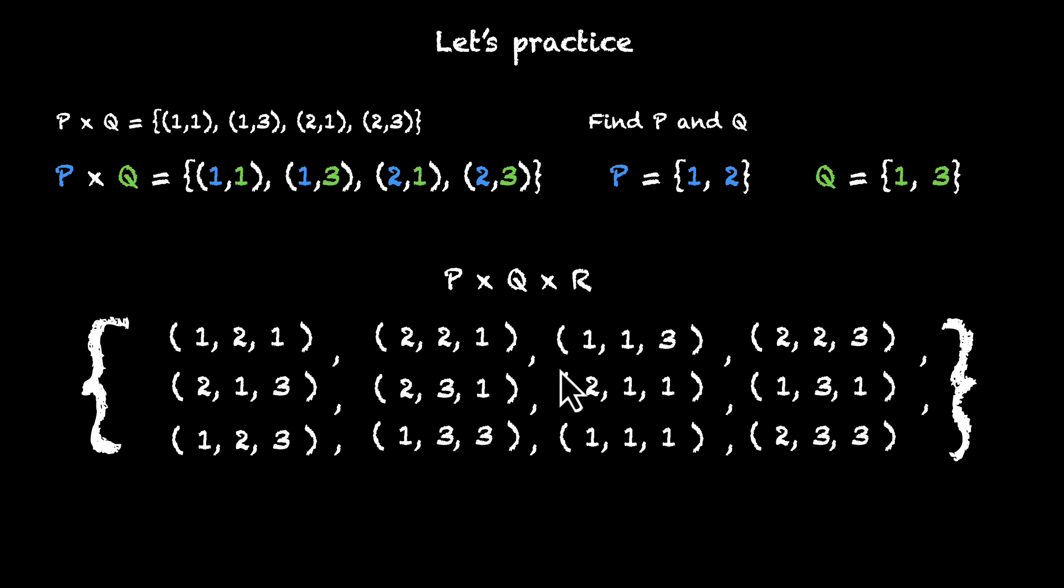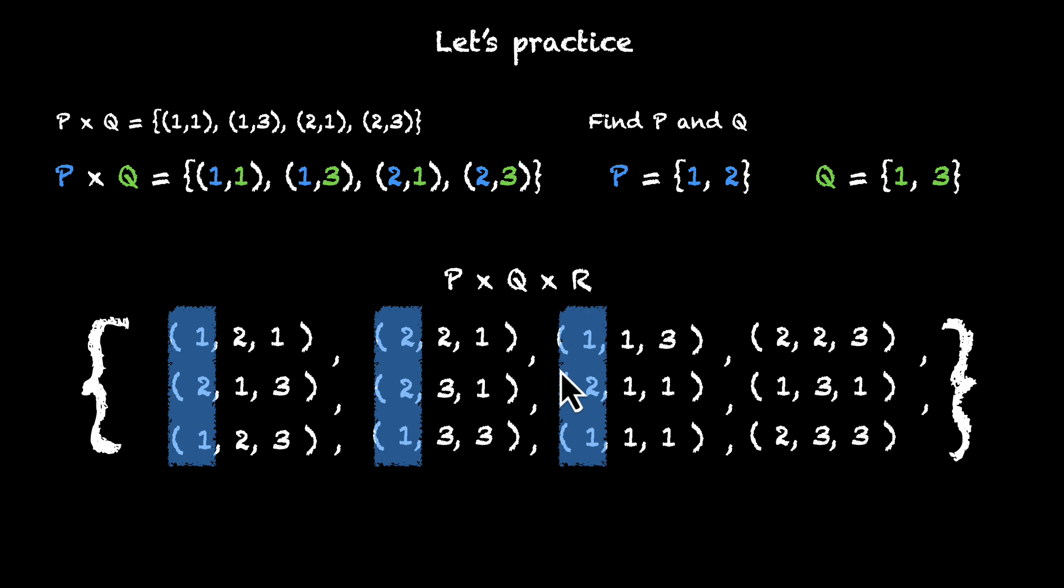Okay, so to find P only look at the first elements of these ordered triplets. We have 1, 2, 1, 2, 2, 1, 1, 2, 1 and then 2, 1, 2. Only 1s and 2s. Interesting. So P is actually {1, 2}.